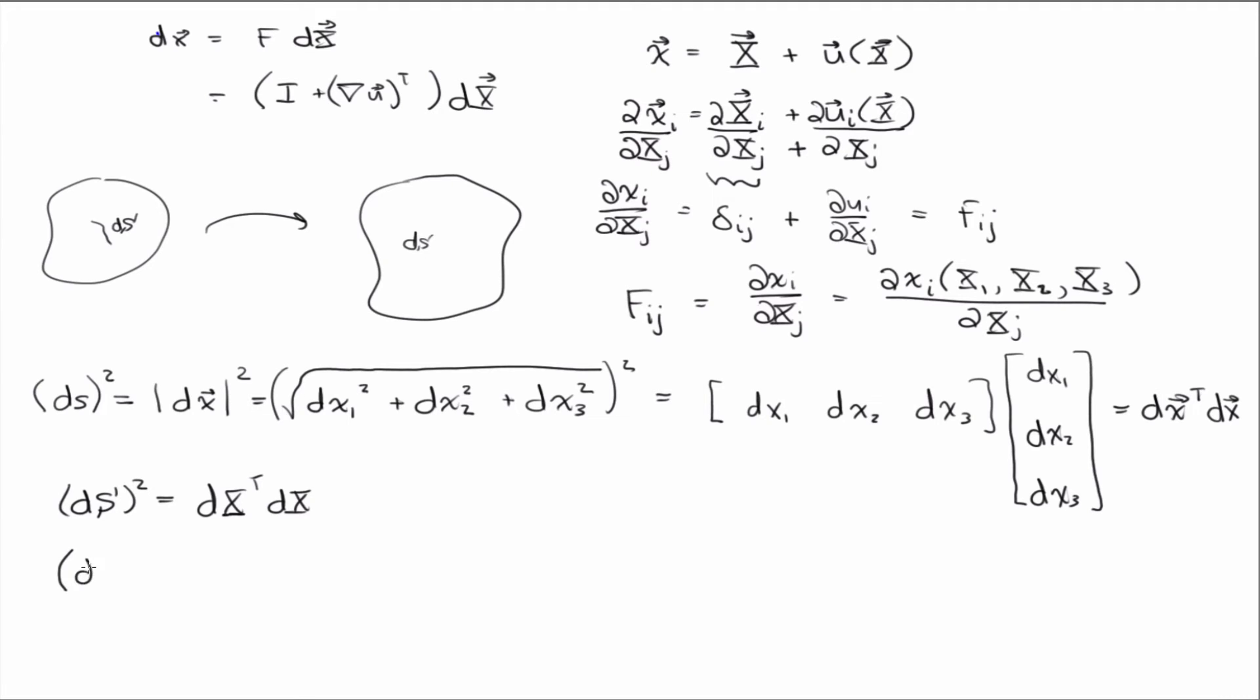So we said we're going to define the strain as the change in squared length of line segment. Right? So ds, d little s is in our final configuration, our current configuration. d big X, d big S squared is in the reference configuration. And so then let's write out. We have that's d little x transpose dx minus d big X transpose d big X. Anybody know where I got that? So I just plug this in here and this in there to get that. Okay?